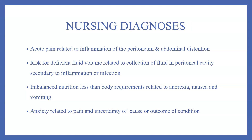Urine output will be less than 0.5 ml per kg per hour. The common nursing diagnoses include acute pain related to inflammation of the peritoneum and abdominal distension, and risk for deficient fluid volume related to collection of fluid in the peritoneal cavity secondary to inflammation or infection.